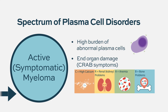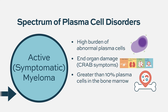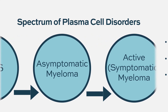They have bone lesions — destructive bone lesions — or anemia, or kidney dysfunction, or immune problems related to the plasma cell disorder. That's called symptomatic myeloma. Those patients usually have greater than 10% plasma cells in their bone marrow and organ damage attributable to the myeloma.